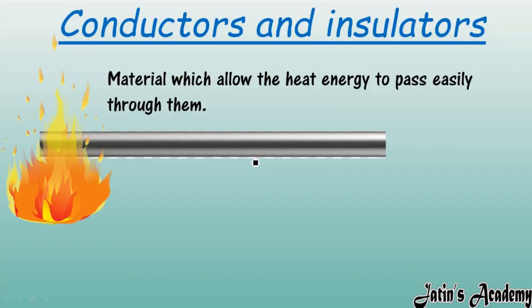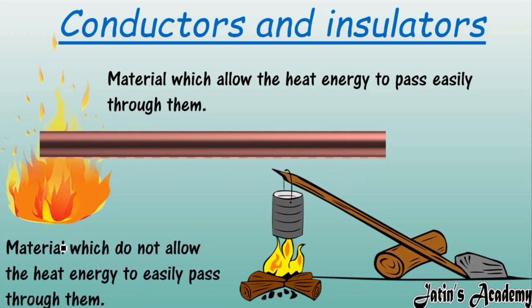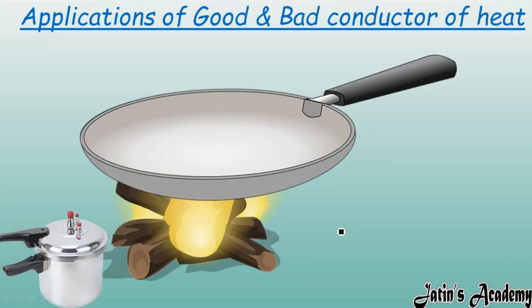In conduction, we have two main categories: conductors of heat and insulators of heat. Conductors are materials which allow heat to pass through them — for example, iron, copper, and brass. Insulators are materials which do not allow heat energy to pass through them — for example, wood, paper, and glass. These are known as bad conductors or insulators of heat.